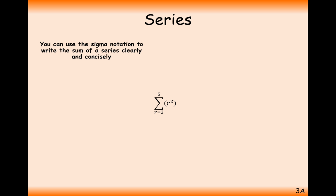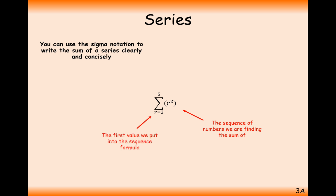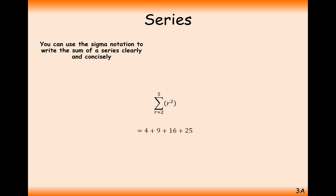For this next example, the first value we substitute in is 2, so 2 squared is 4. The next number is 3, so 3 squared is 9. The next number is 4, which gives 16, and the final number is 5 squared, which gives 25. So the sequence of numbers we're summating here is the square numbers. We put in every integer from 2 up to 5 and add them all up: 4 plus 9 plus 16 plus 25 gives 54.